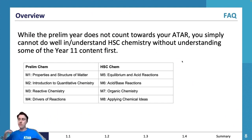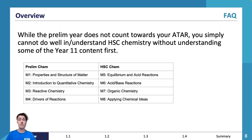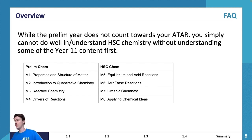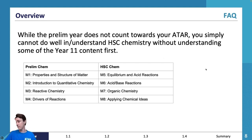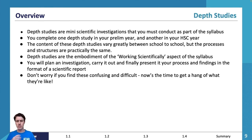HSC chemistry is more important because it counts towards your ATAR. The topics you'll cover in preliminary chemistry are: properties and structure of matter, introduction to quantitative chemistry, reactive chemistry, and drivers of reactions. In HSC chemistry you'll cover equilibrium and acid reactions, acid-base reactions, organic chemistry, and applying chemical ideas.